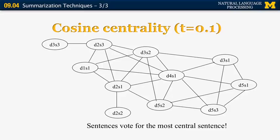So in a graph like this, what you want is for sentences to vote for the most central sentence by essentially passing messages along the edges of the graph. So if D4S1 is the most central sentence, we want to produce that as part of the summary.